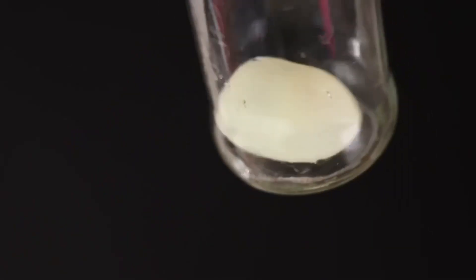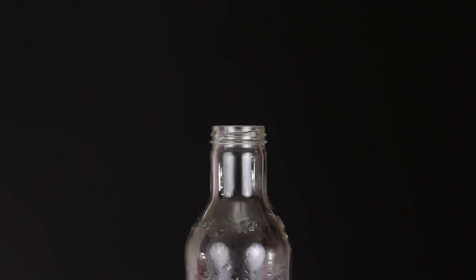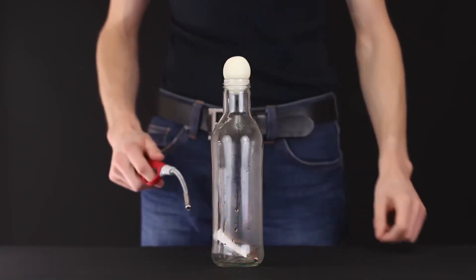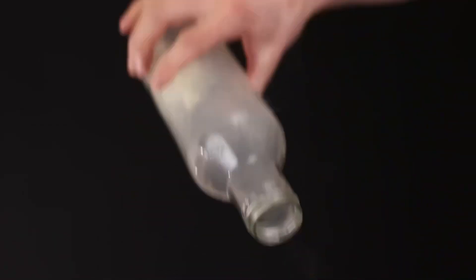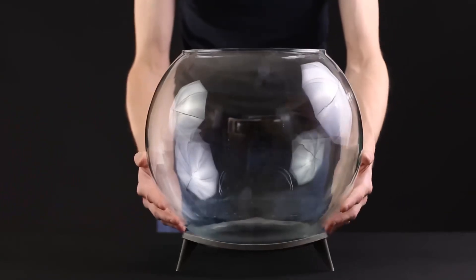The egg goes in the bottle. The same trick can be done with a burning piece of paper. The fire will burn all the oxygen inside and the egg will be drawn inside even faster.